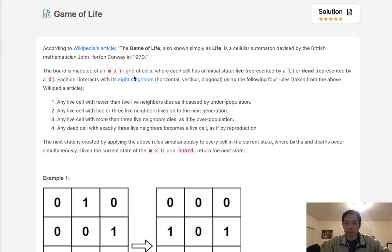Now the board is made up of m times n grid of cells, where each cell has an initial state, alive, represented by a 1, or dead, represented by a 0. Each cell interacts with its 8 neighbors, horizontal, vertical, and diagonal, and use these following rules.